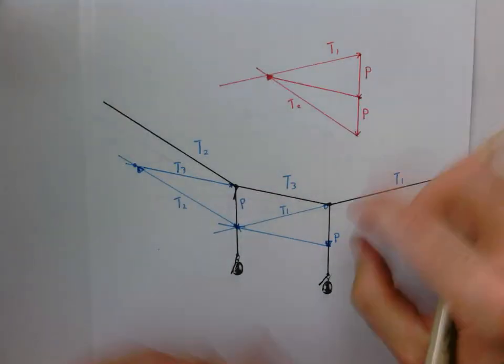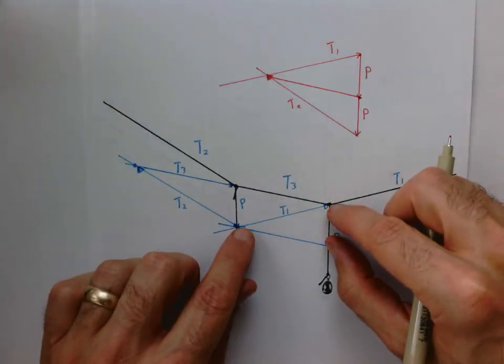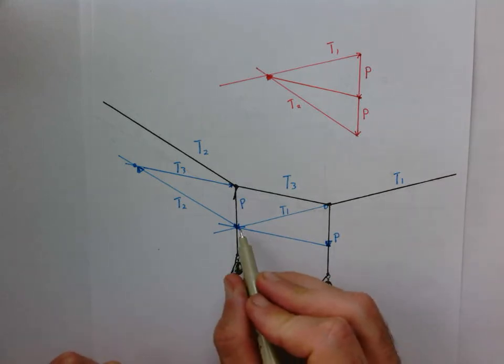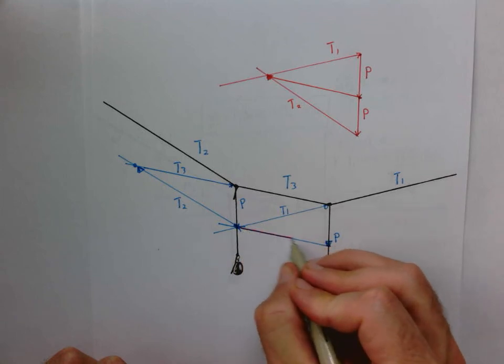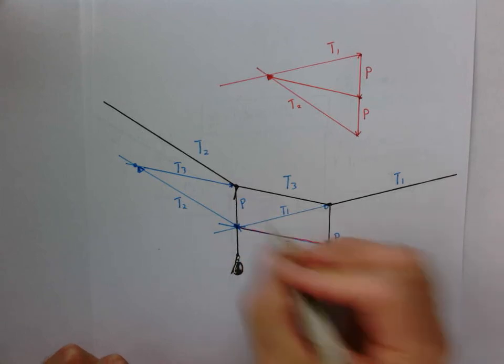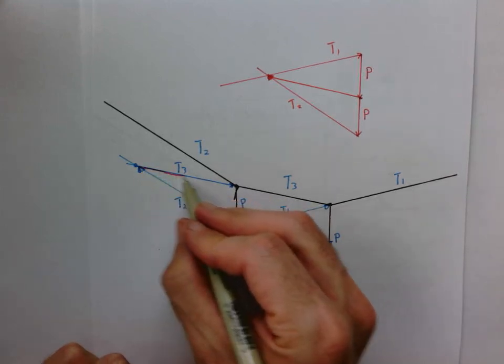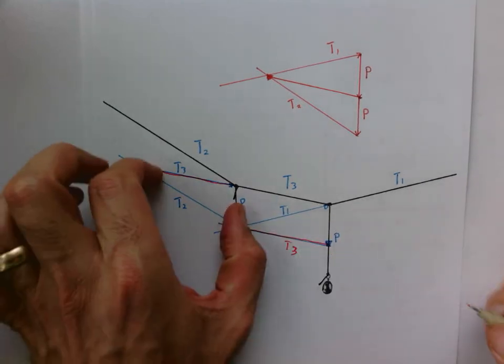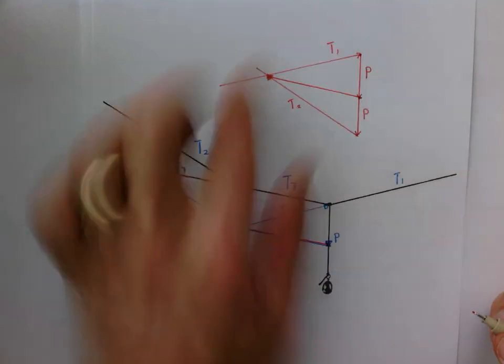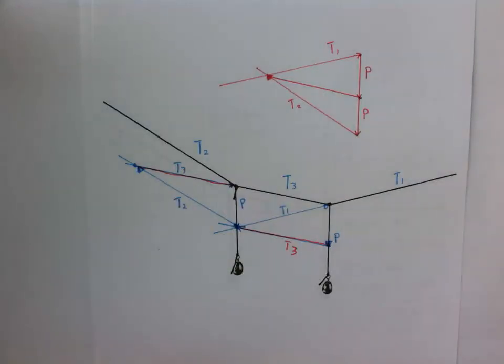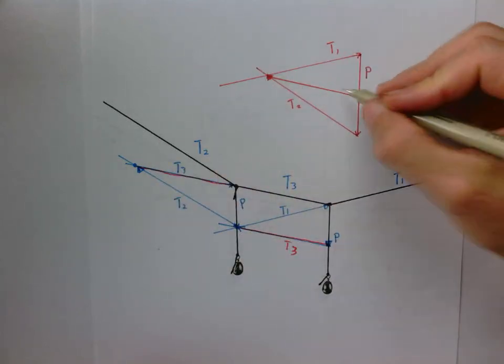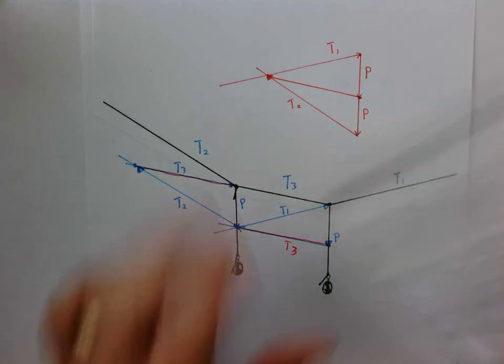And by stacking these two triangles on top of each other, what we're really seeing is that this side here, remember when we drew this, this side here was T3, has to be the same as this side here. So it's like I'm picking this triangle up and putting it here. But by drawing it here, you see how quick I did that? All I had to do is draw my two downward loads, copy these two angles and translate them up there, complete the triangle.